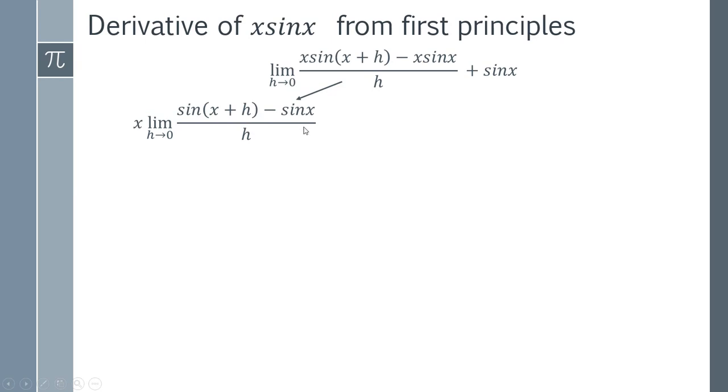Now we've got sine x plus h and we can split this up by using our famous formula that sine a plus b is sine a cos b plus cos a sine b. So if we let x be our a and h be our b, we can take this expression substituting x and h into it. We can now expand this out and we end up with this expression here.